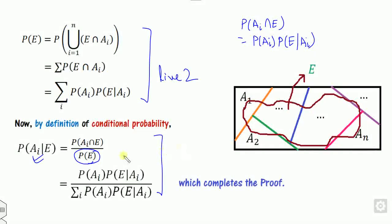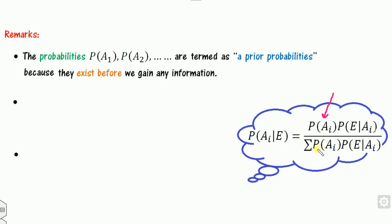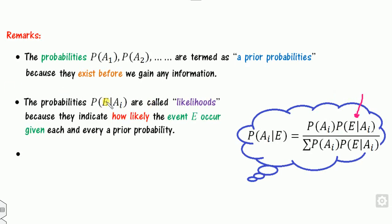Some remarks about the probabilities in this formula. The P(Ai) values, highlighted in pink, are known in advance — they are called prior probabilities because they exist before we gain any new information. The second set of probabilities, P(E | Ai), are called likelihoods because they indicate how likely event E occurs given each Ai.